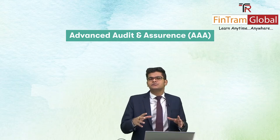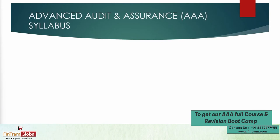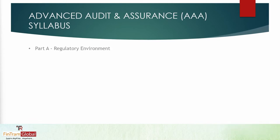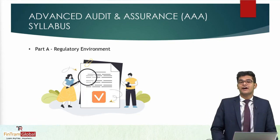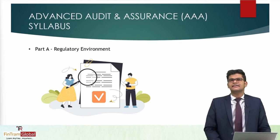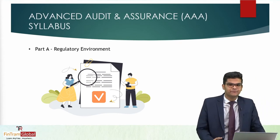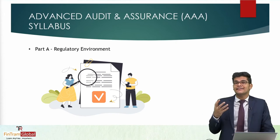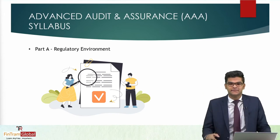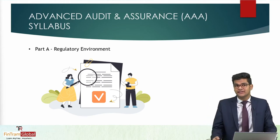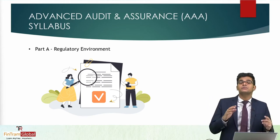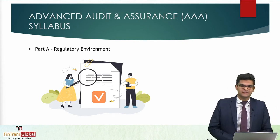When it comes to the AAA paper, the first thing we're going to look at is the syllabus. The first area is Part A: the regulatory environment. We will be looking at all the regulations that regulate the audit profession, and we also learn about why we need those regulations. That's basically what Part A is all about — the regulatory aspects of auditing.